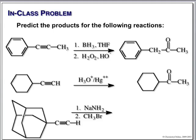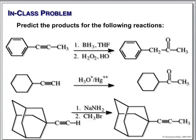Here we have an adamantane structure — reacting with sodium amide, which is sodium dissolved in liquid ammonia. That gives us the anion at the terminal alkyne carbon. The alkyne anion then attacks bromomethane in an SN2 reaction, adding a methyl group to that carbon.